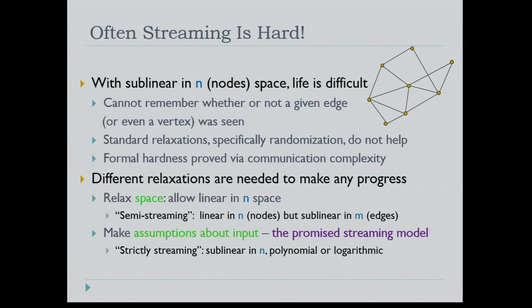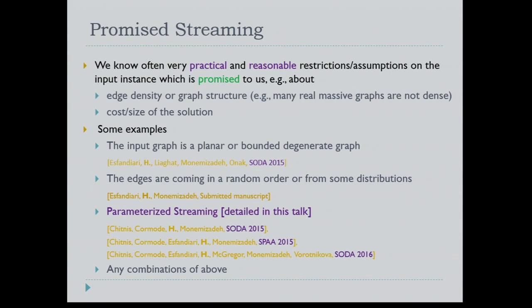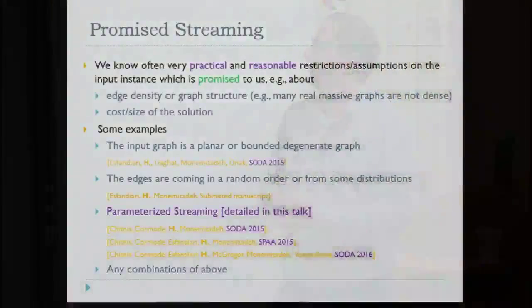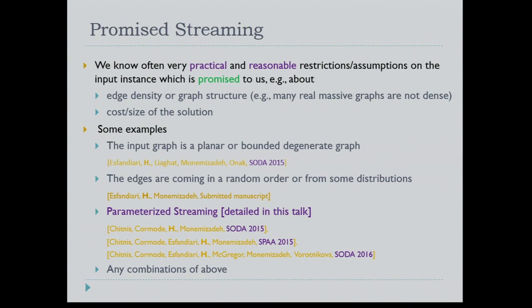In the promised streaming model, we know that the incoming data stream has certain properties, and we want to get sublinear in N — truly small space. The space and update time are usually proportional to each other, so good space implies good update time as well. This goal comes from practical applications, including those at AT&T, where we often knew that the graph structure of the input had restrictions we could exploit.